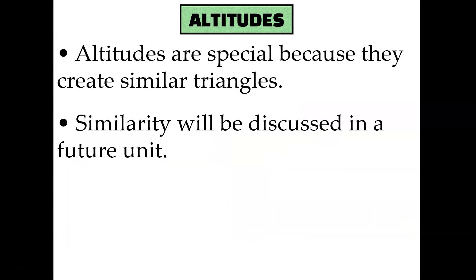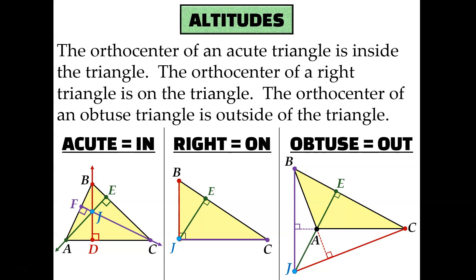Orthocenters and altitudes are special because they make similar right triangles — we haven't learned about similarity yet, so keep that in the back of your mind for the similarity unit next semester. Similar to perpendicular bisectors, altitudes may intersect inside, outside, or on the triangle. For an acute triangle the altitudes intersect inside. For a right triangle, the orthocenter is actually the vertex of the right angle. For an obtuse triangle, the altitudes intersect outside. Keep this in mind when drawing altitudes — you may need to extend outside the triangle to make all three intersect.